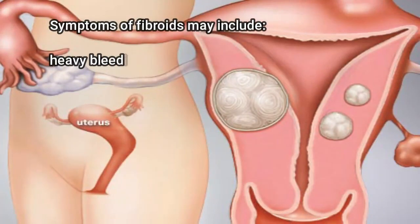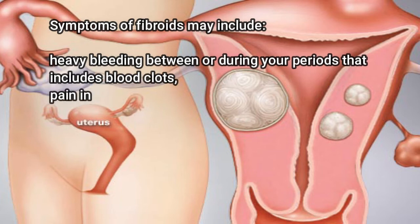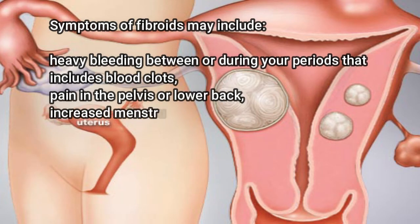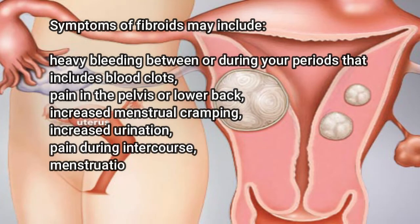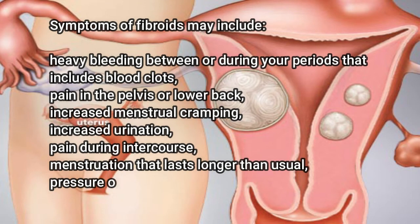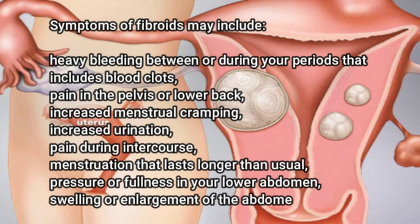Symptoms of fibroids may include heavy bleeding between or during your periods that includes blood clots, pain in the pelvis or lower back, increased menstrual cramping, increased urination, pain during intercourse, menstruation that lasts longer than usual, and pressure or fullness in your lower abdomen, or swelling or enlargement of the abdomen.